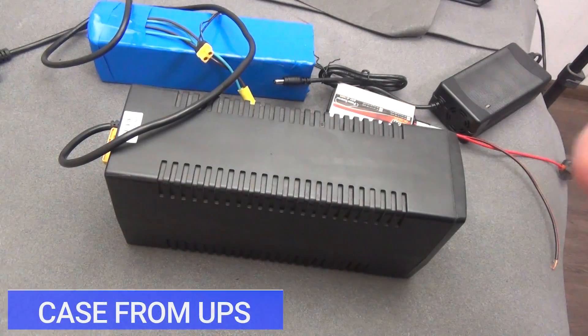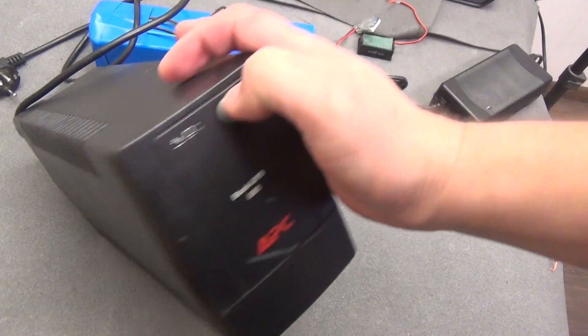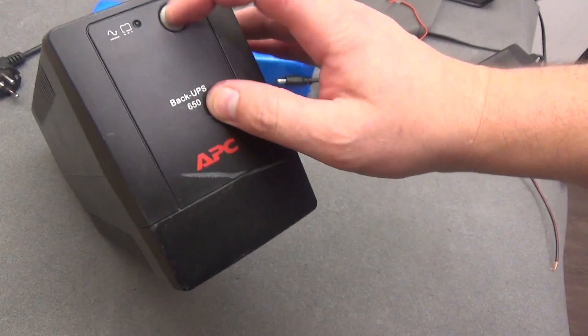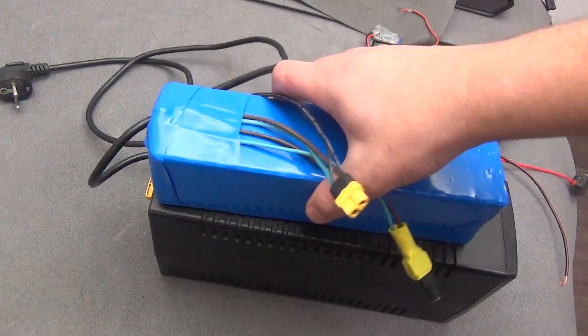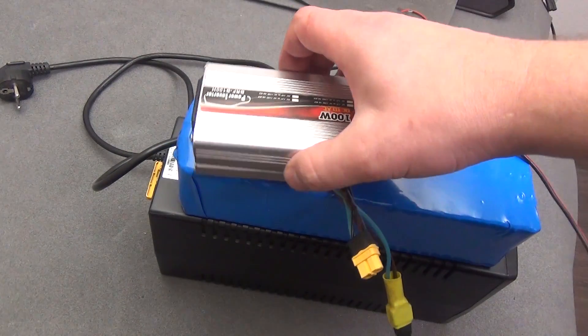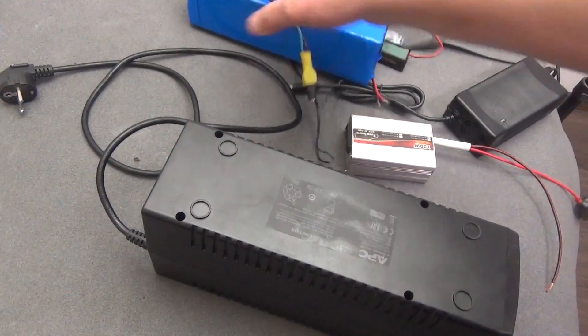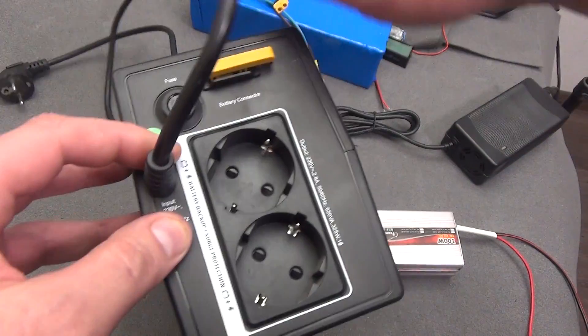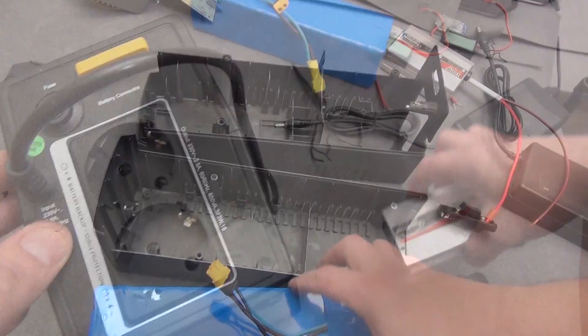I started thinking about the case, how to pack everything nicely. And nothing came to my mind, or rather, all I had at hand was this black UPC that had already failed. In fact, what I need from it is the case itself, because it almost perfectly matches the battery. There is still free space left and I can attach a 100W 12-220V converter here on top. On the back, another big plus here is that there are already 2 sockets. I will remove this and power the 2 sockets from my converter.